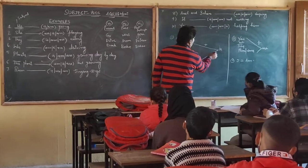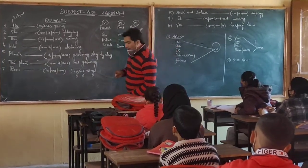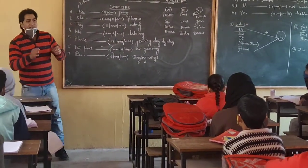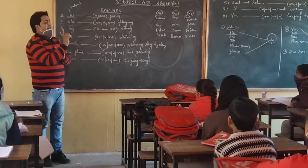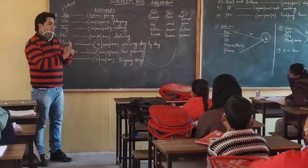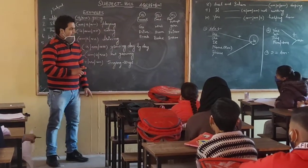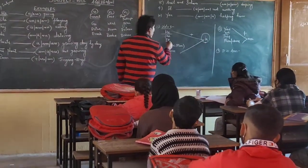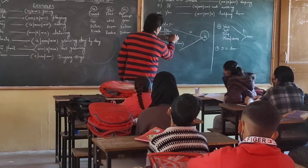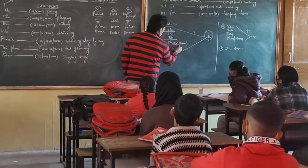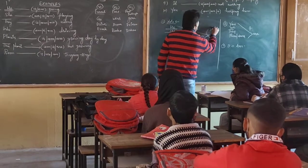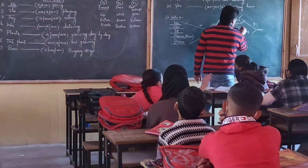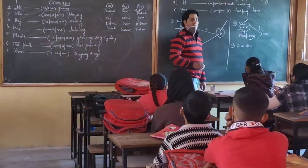I will talk about subject-verb agreement. Remember: if we have 'he', if we have 'she', if we have 'it', if we have a name, if we have a singular noun, we will make use of 'is'. And if we have 'you', if we have 'they', or a plural noun, we make use of 'are'.